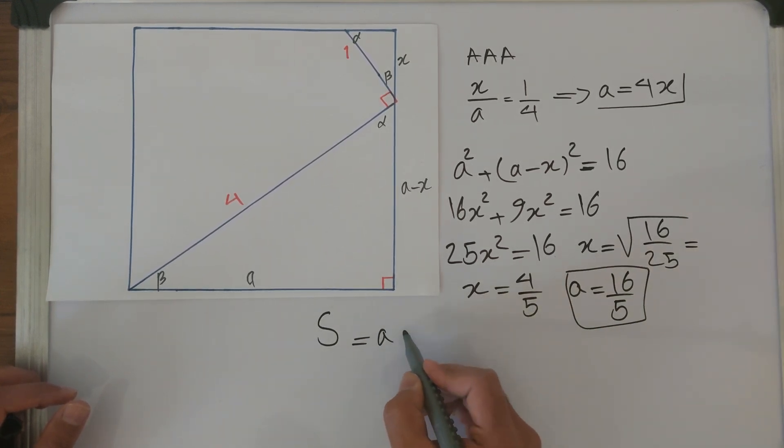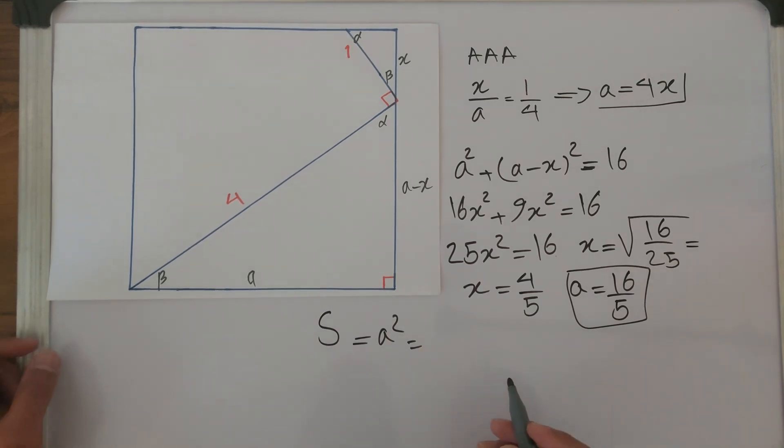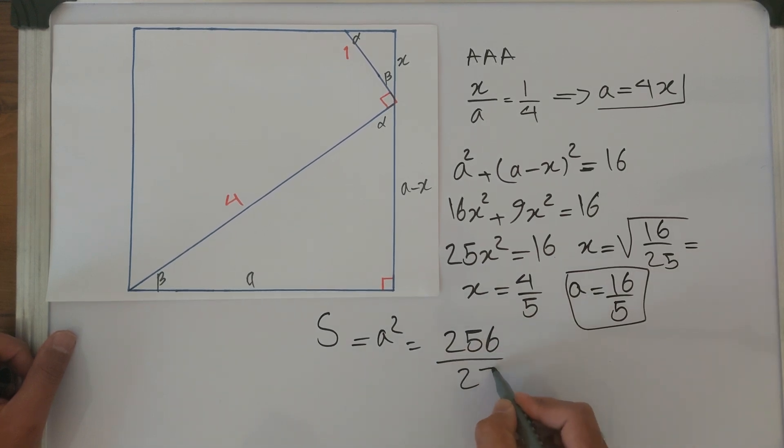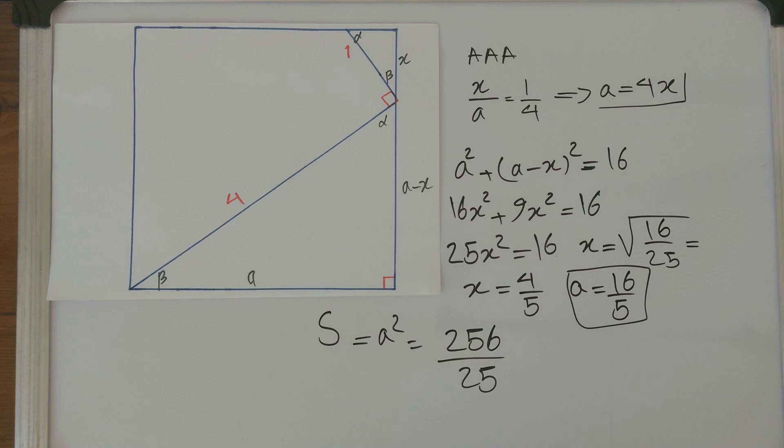Now the last step is obviously the area of this square equals a squared, which is 16 over 5, the whole thing squared, which is 256 over 25.